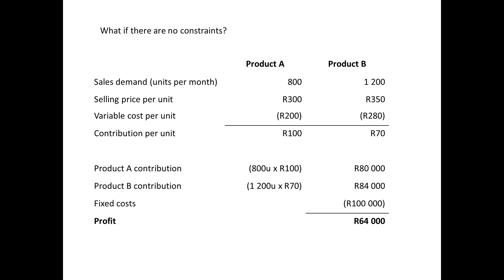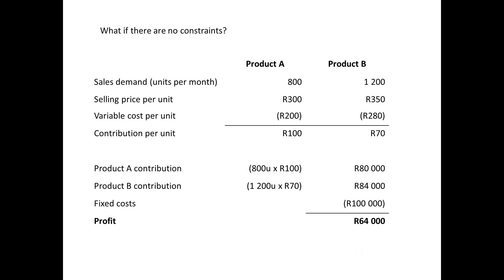To calculate profit with no constraints: total contribution from A is 800 units × 100 rand = 80,000 rand; for B it's 1,200 units × 70 rand = 84,000 rand total contribution. Deducting fixed costs gives a profit of 64,000 rand. But now let's look at the question again — they said available machine hours are 2,000 and available labor hours are 3,500.